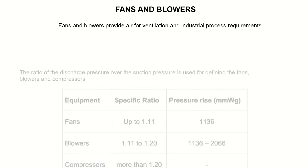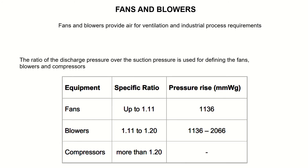In this lecture I will explain the difference between fans and blowers, and discuss different types of fans and blowers and their applications. Fans and blowers provide air for ventilation and industrial process requirements. The major difference between a fan, blower, and compressor is in the form of their delivery pressure. The ratio of suction pressure to delivery pressure is called the specific ratio.